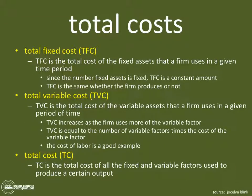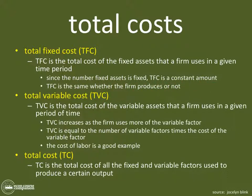Here are some definitions of total cost. Total Fixed Cost, or TFC, is the total cost of the fixed assets that a firm uses in a given period of time. Since the number of fixed assets is fixed, the total fixed cost is a constant amount. Therefore, TFC is the same whether the firm produces or not. The best way to think about this is to think about a ski slope.